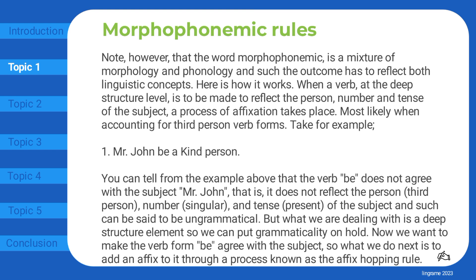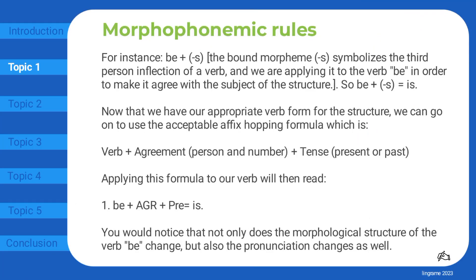Now we want to make the verb form 'be' agree with the subject, so what we do next is to add an affix to it through a process known as the affix hopping rule. For instance: B plus S. The bound morpheme S symbolizes the third person inflection of a verb, and we are applying it to the verb B in order to make it agree with the subject of the structure. So B plus S equals 'is'.